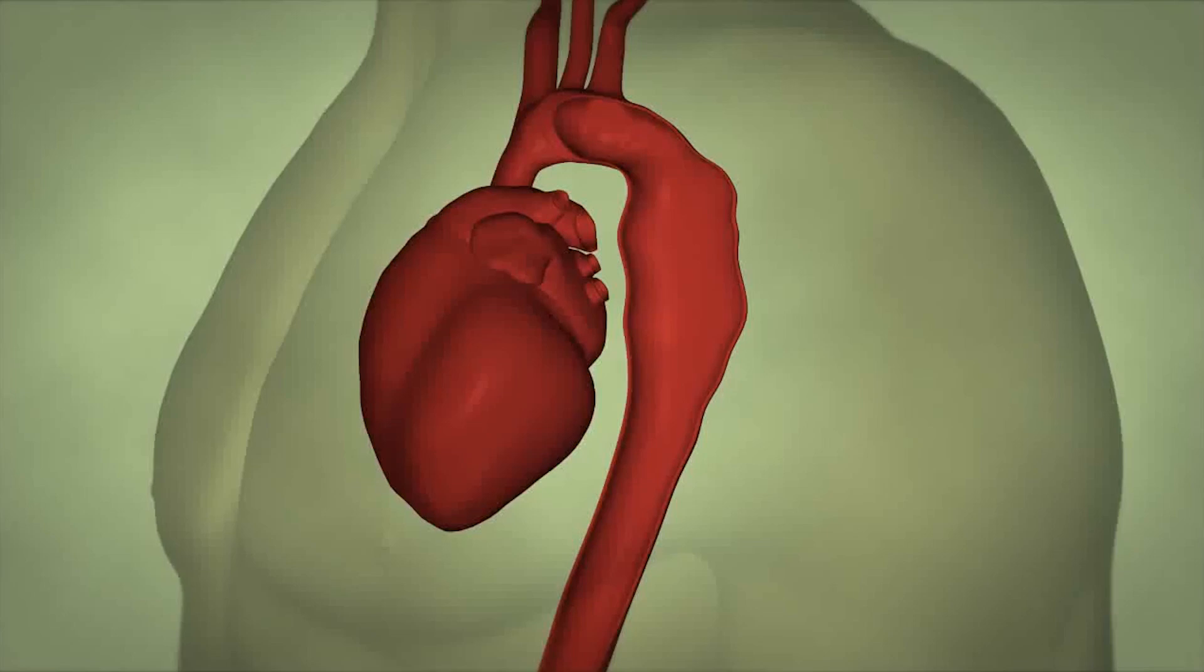The aorta is the largest artery in your body that starts at your heart, passes through the chest, and then through the abdomen.